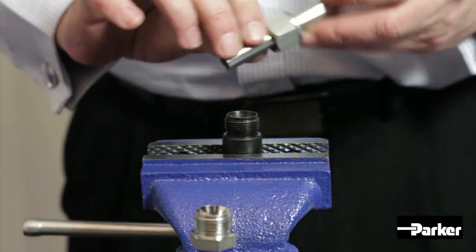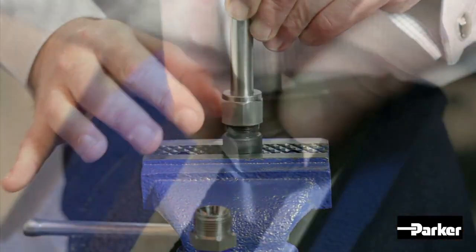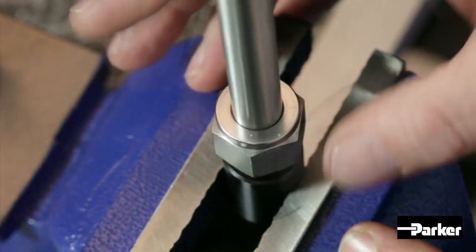Then, holding the pre-assembly tool appropriately, simply insert the tube ensuring it is fully abutted into the tool.